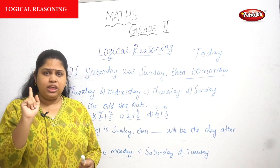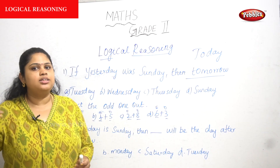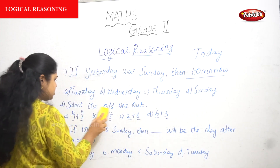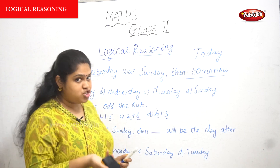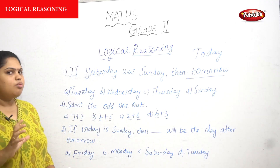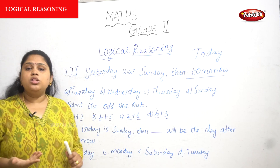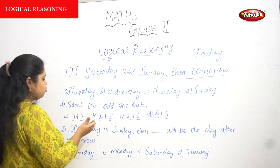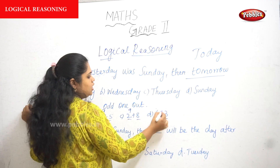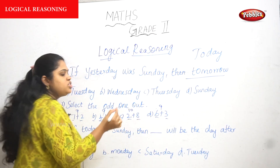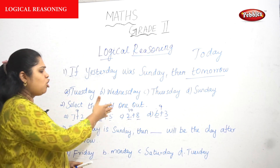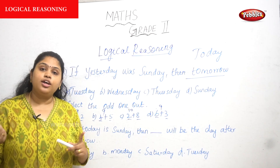So 2+8 will be the odd one out because both numbers are even. Everything else has one odd and one even number. Only option C has both even numbers. That is one type of reasoning. But there is also a second approach — let's check it out: 7+2=9, 4+5=9, 2+8=10, 6+3=9. Option C is the odd one out because its sum is 10, not 9.